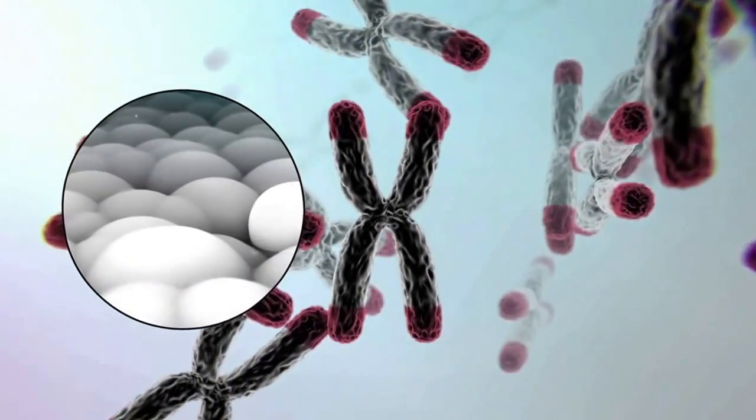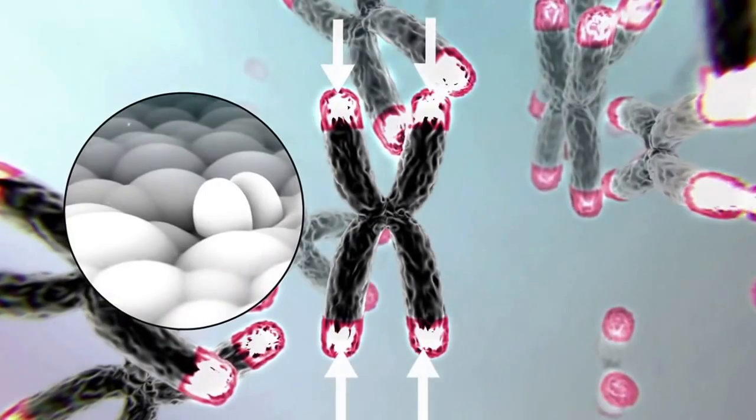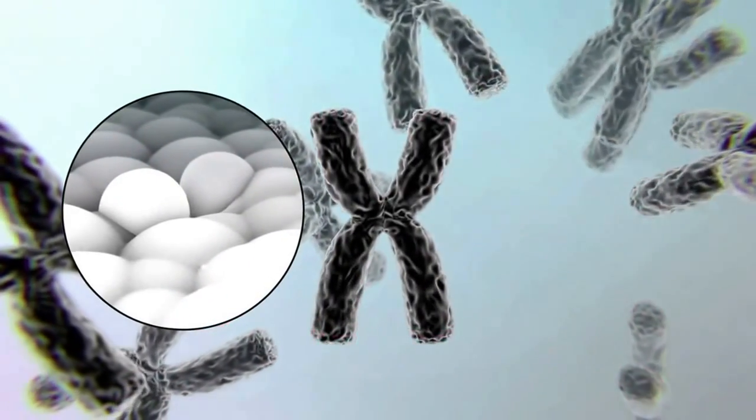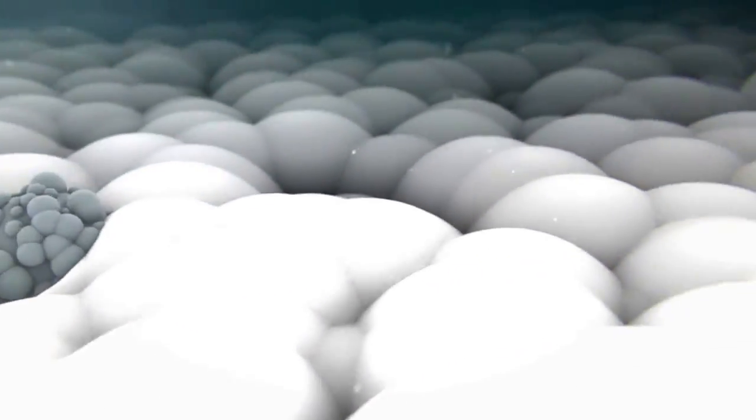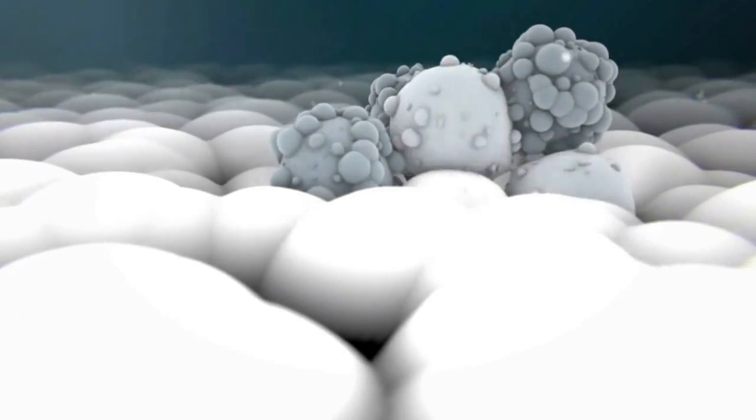Every time a cell divides, the telomere gets shorter. Once it runs out, the chromosome malfunctions and sets off responses that kill its cell. When precancerous cells divide, the telomere fuses normally run out before full-blown cancer develops. It's a built-in safety feature.